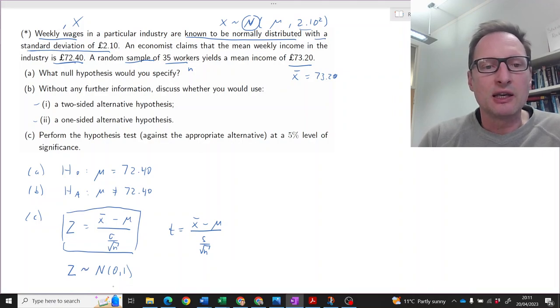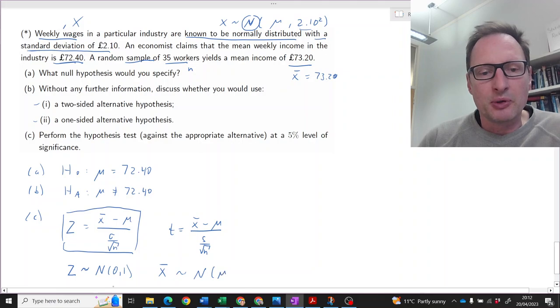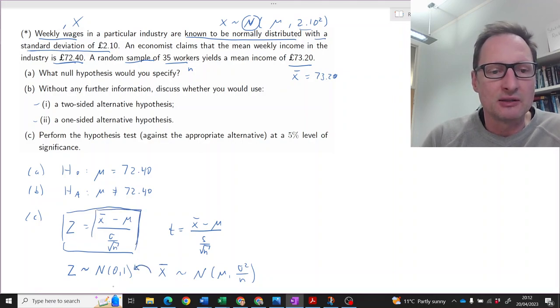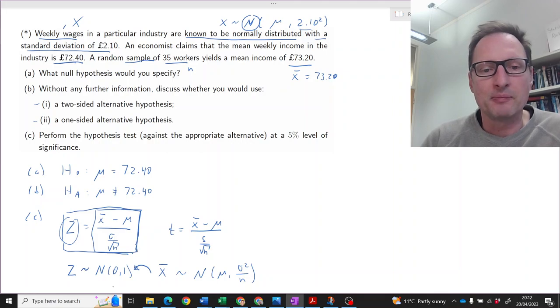So that's going to be our distribution for z given the null hypothesis is correct. With all of this underneath our belt, we can now figure out what we decide regarding this test. Before we do that, I just want to mention that the z-distribution corresponds to the distribution of the sample mean, which is also a normal distribution with population mean mu and variance sigma squared divided by n. So that's the sampling distribution of X-bar, but once we standardize using this formula here, we get that the standardized value z is standard normally distributed.